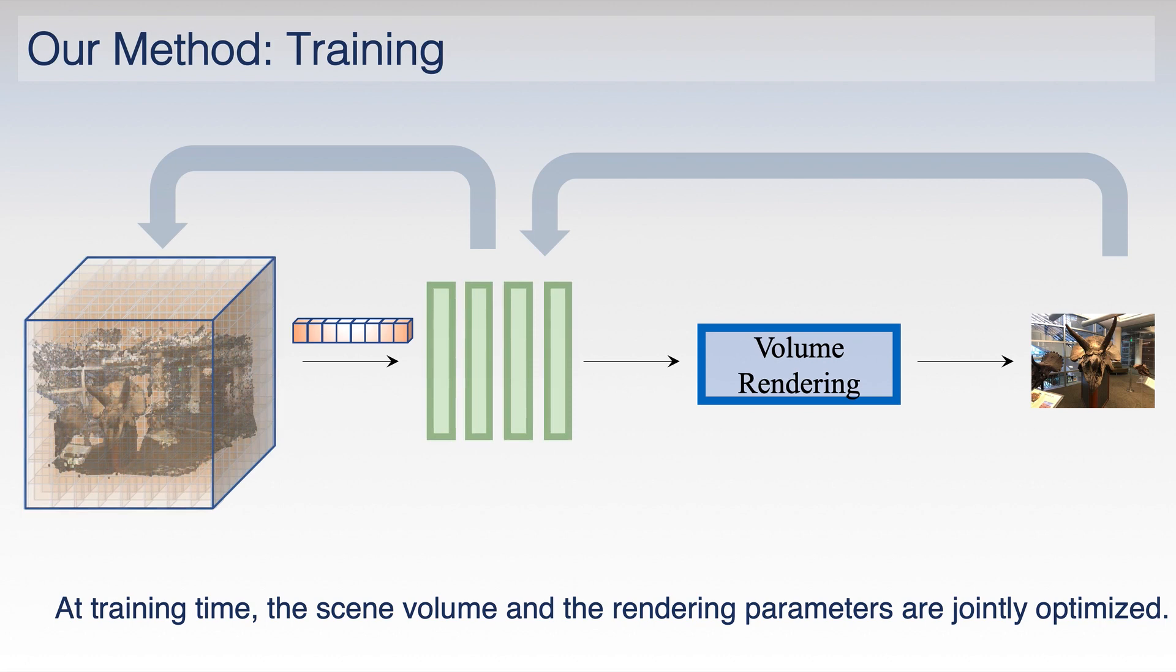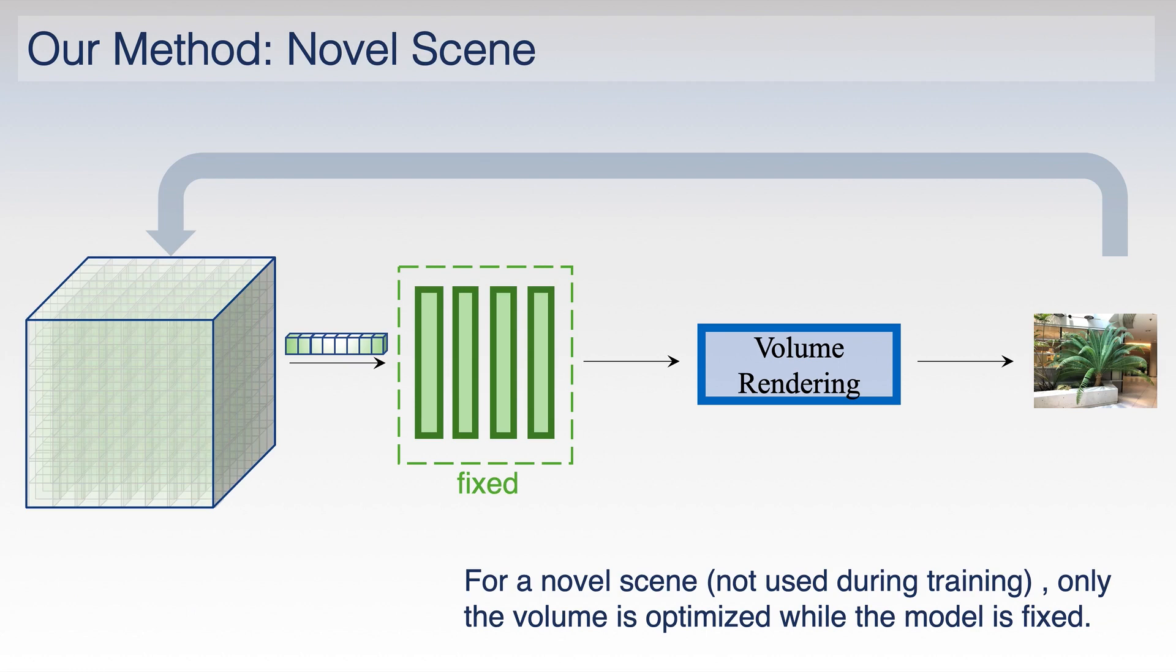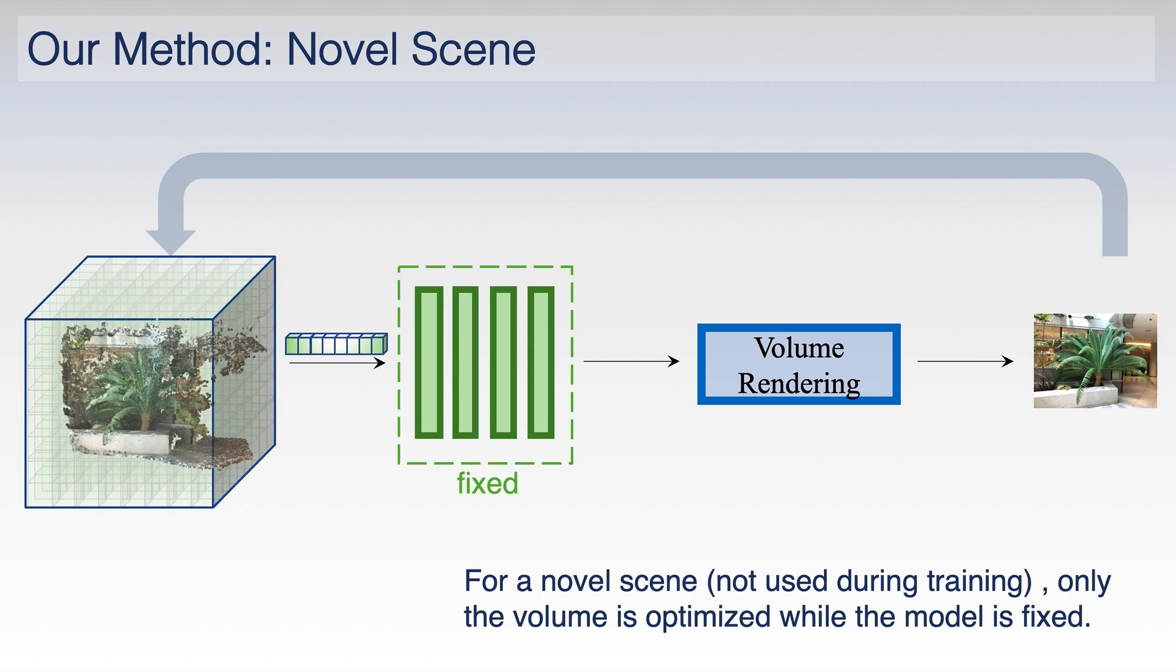At training time, we train our model on multiple scenes simultaneously. Both the radiance function and the feature volumes for each scene are optimized until convergence. After the initial training, for each new scene, the radiance network is kept fixed and only the feature volume of the scene is optimized.